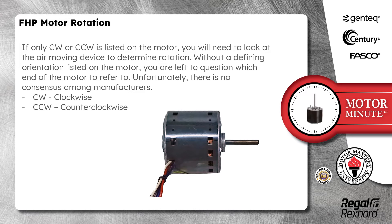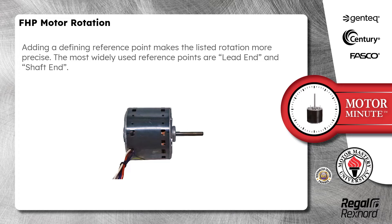CW is the acronym for clockwise. CCW is the acronym for counterclockwise. Adding a defining reference point makes the listed rotation more precise. The most widely used reference points are lead end and shaft end.